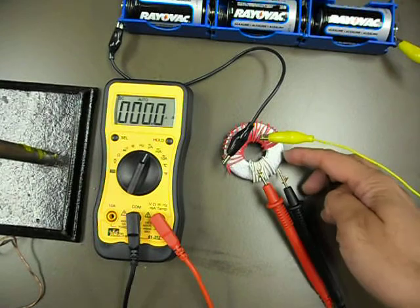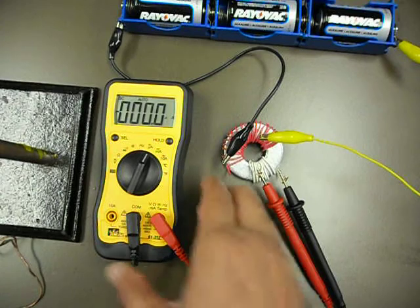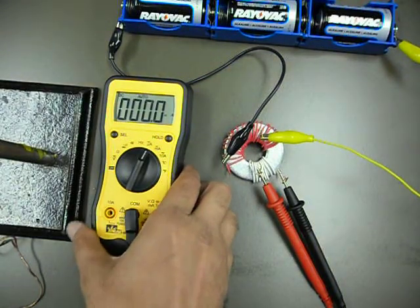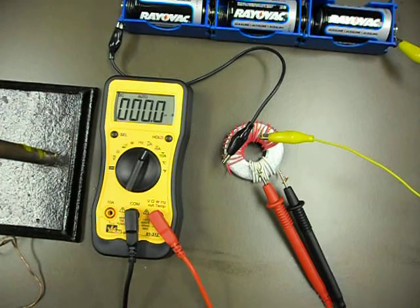The secondary coil is connected to the multimeter. I have set the setting on the microammeter portion of the multimeter.